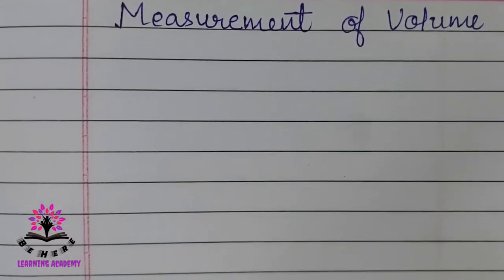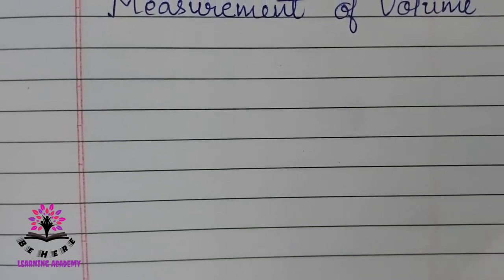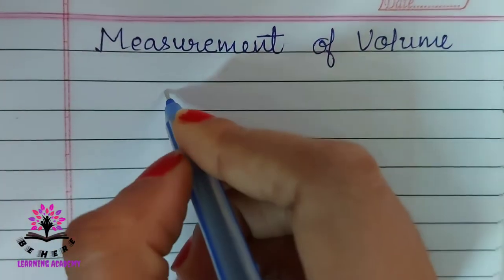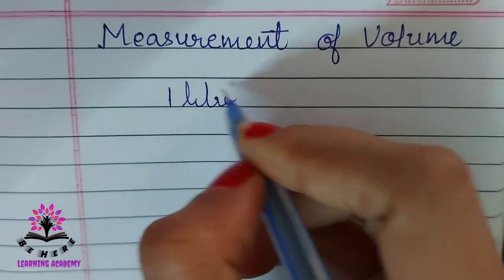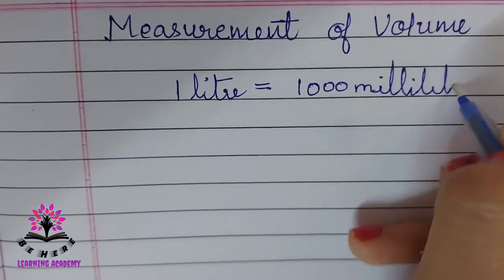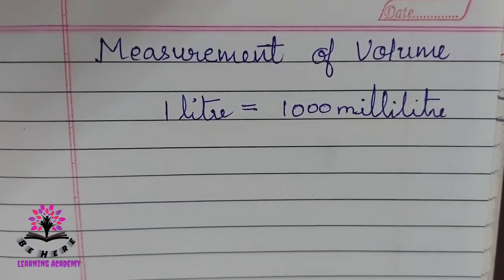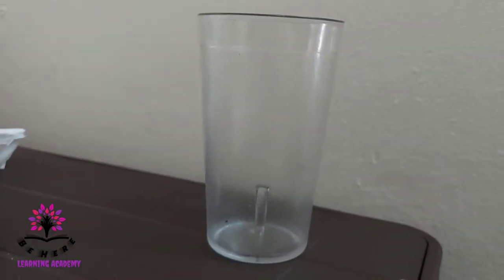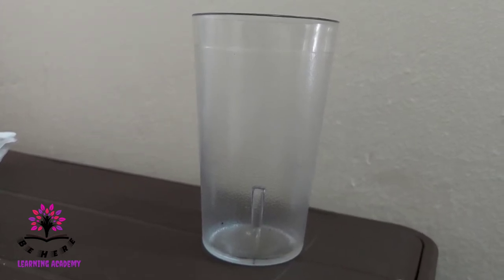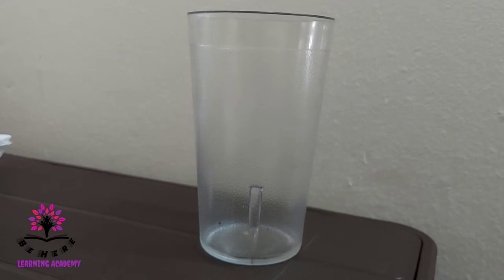In your previous class you learned that the quantity of liquids is measured in liters, and you know the containers used to measure volume. You also studied that one liter is equal to 1000 milliliters. The quantity of liquid a container can hold is called the capacity of that container.